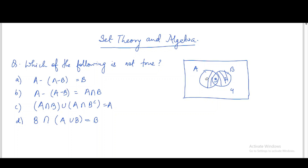In every option, you need to find whether the left-hand side and right-hand side are equal or not. If they are not equal, that option is not true. If they are equal, it is true. Let's check the first option.